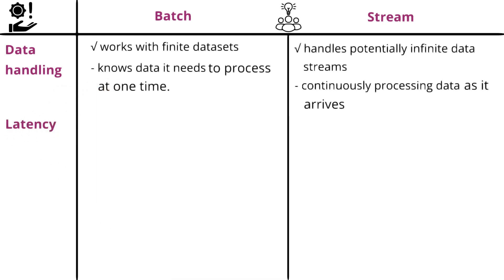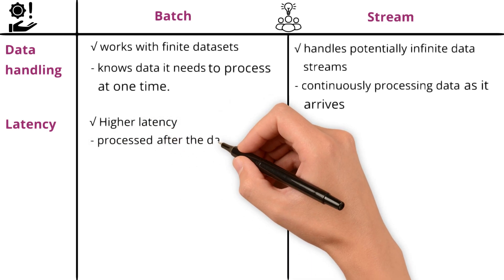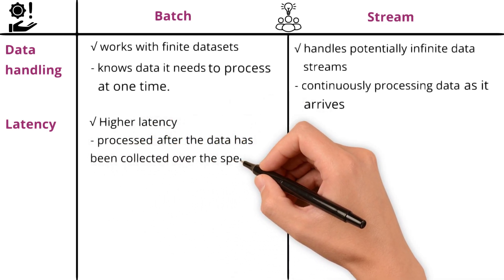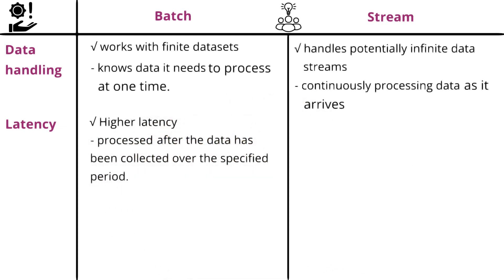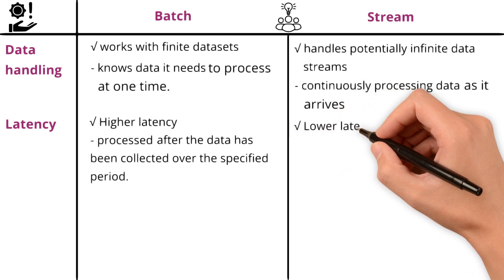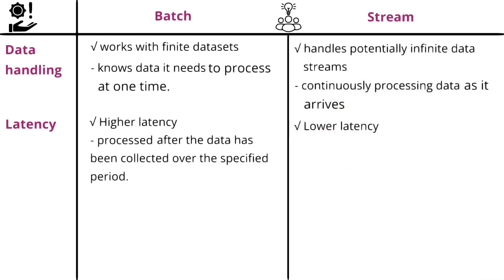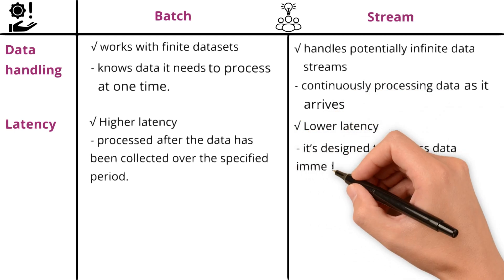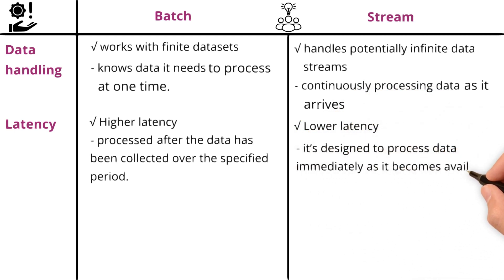Speaking of latency, higher latency is typical in batch processing since the data is not processed in real time. It's processed after the data has been collected over the specified period. On the other hand, lower latency is a crucial feature of stream processing since it's designed to process data immediately as it becomes available.